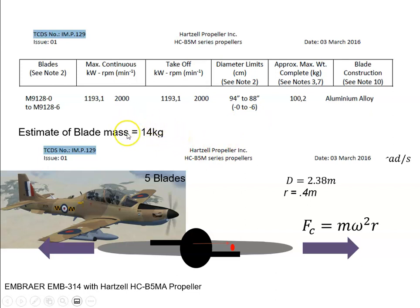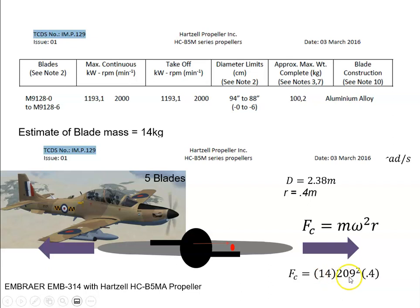Plugging the mass, radians per second, and radius into the equation: mass = 14 kg, ω = 209 rad/s, r = 0.4 m — that comes out at 244 kilonewtons. So each blade experiences a centrifugal force of 244 kilonewtons, which is a substantial force.